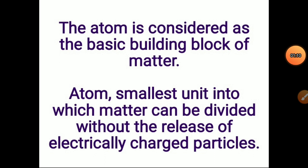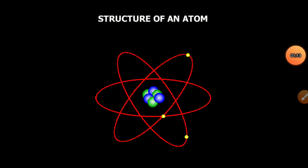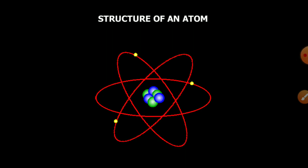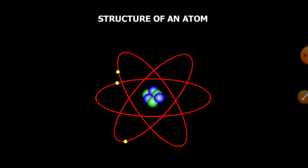What is the structure of atoms? There are so many models proposed by several scientists. Here we will see only three models: the Thomson atomic model, the Rutherford atomic model, and Bohr's atomic model.